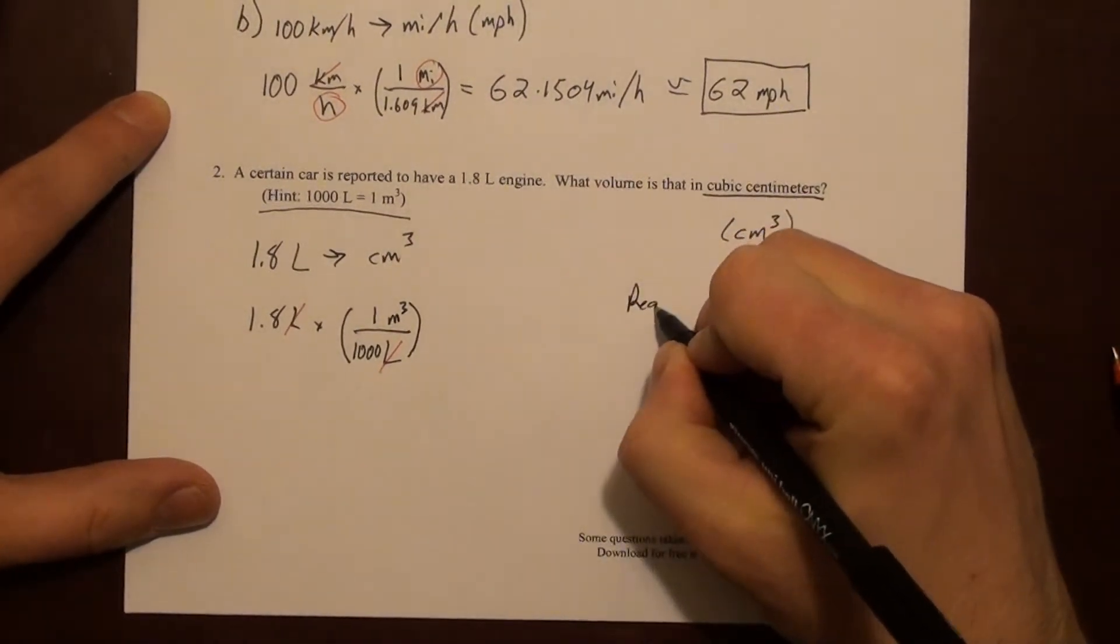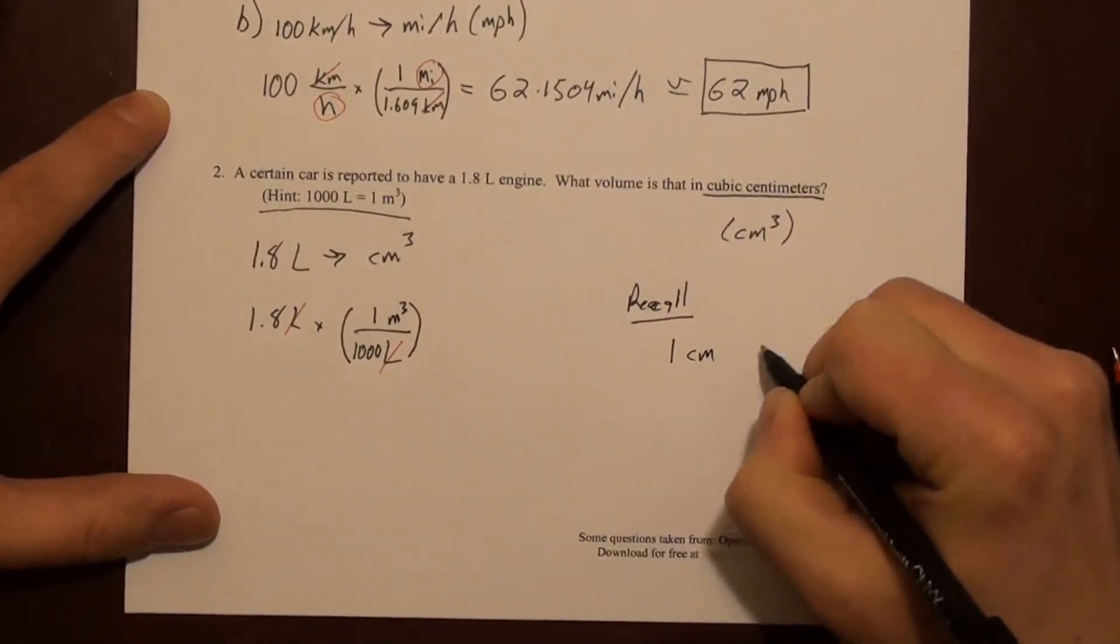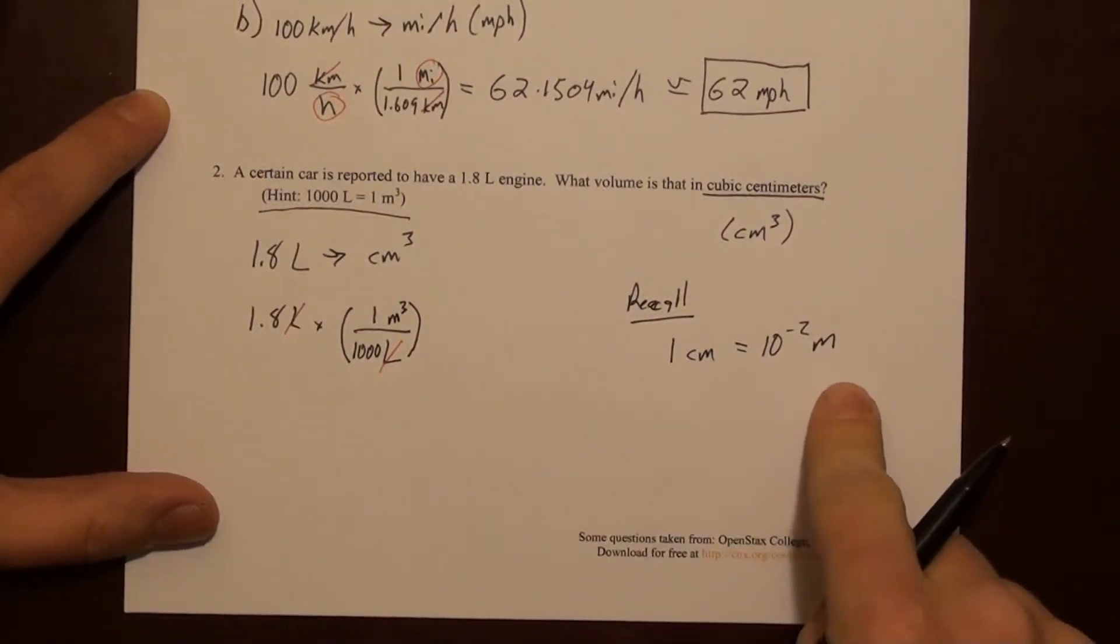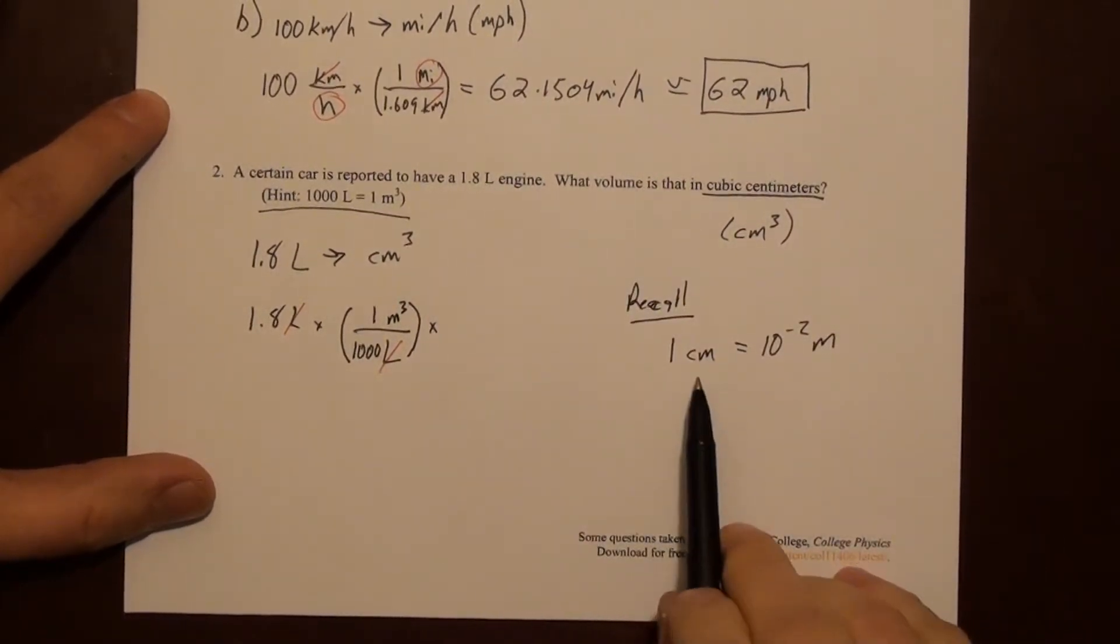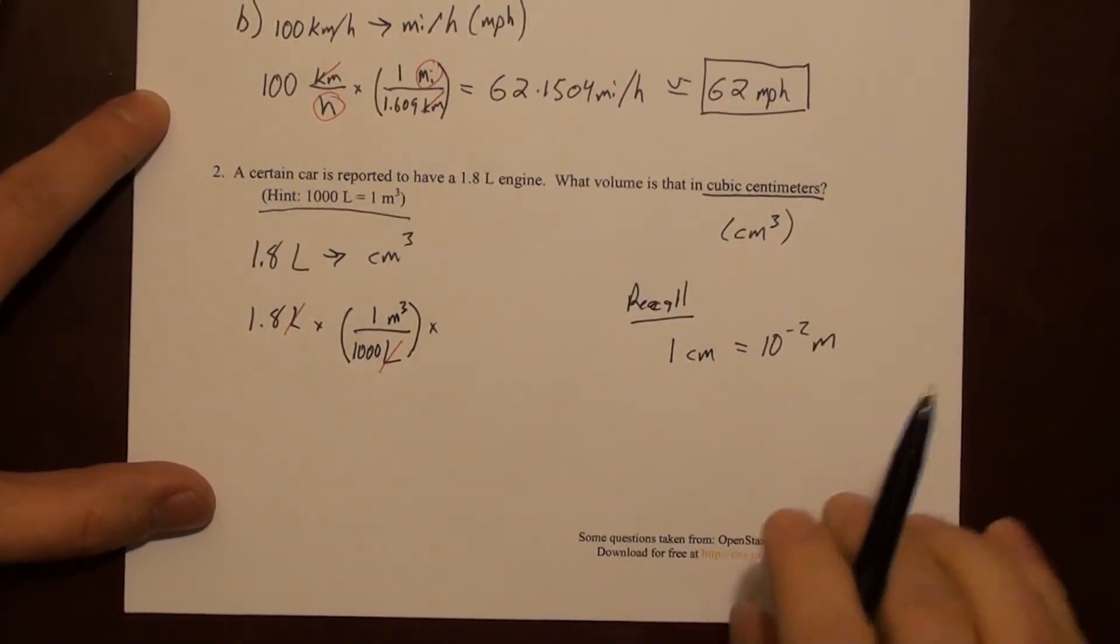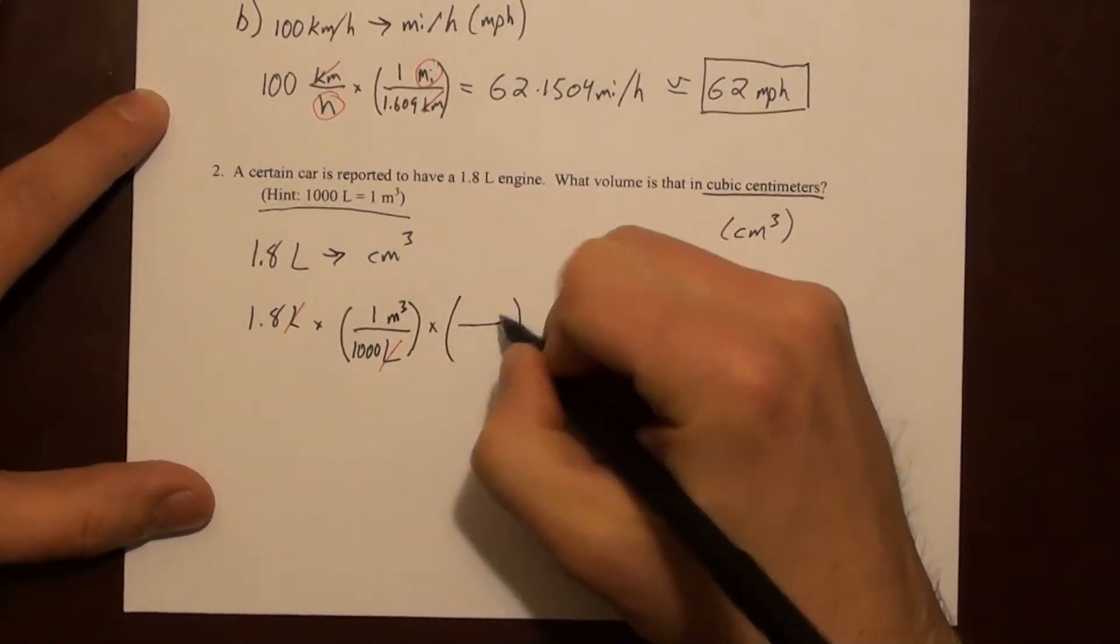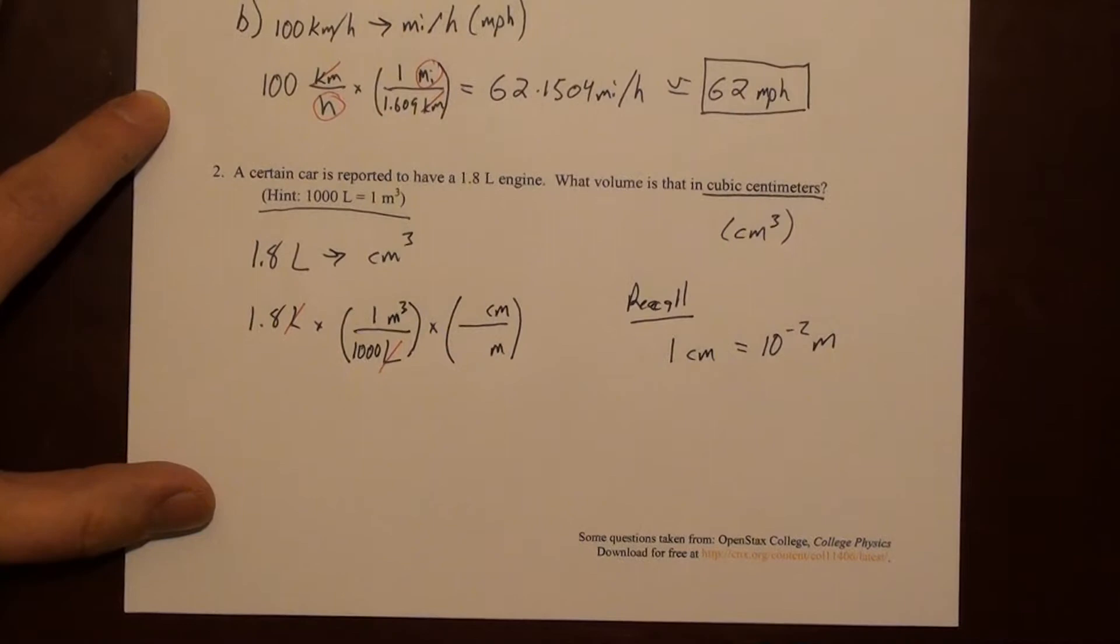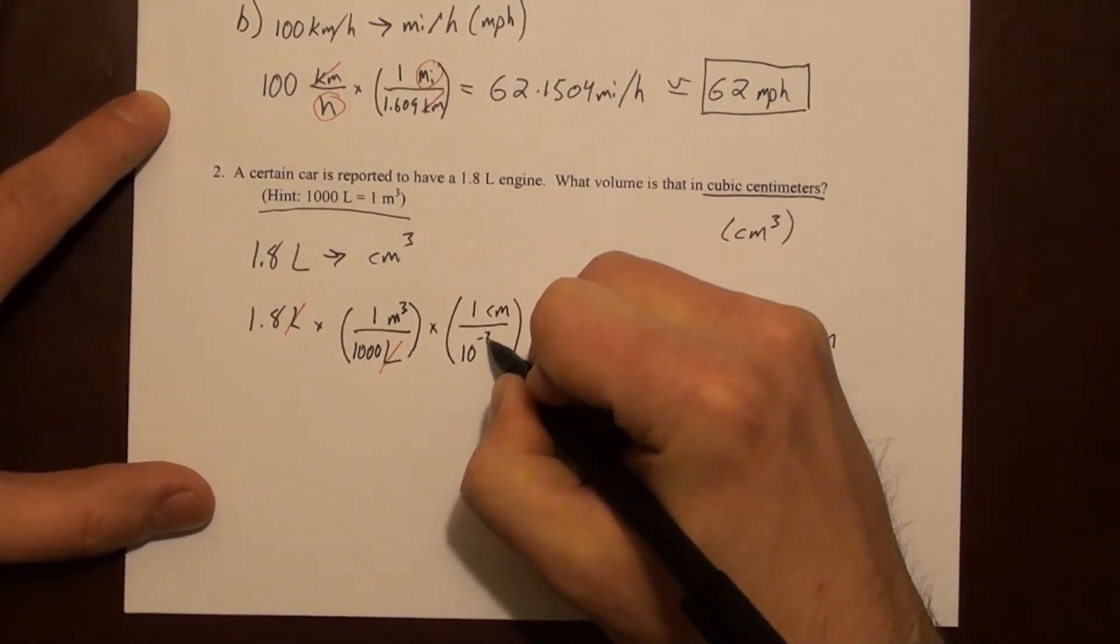Well, if we recall that 1 centimeter is 10 to the minus 2 meters, this will help us with this conversion. Again, we get this because centi is 10 to the minus 2, if you look at the metric prefix list. So we'll fill in that factor here. We want meters to go away. We want centimeters to show up. And it looks like it's 1 centimeter and 10 to the minus 2 on the meters.